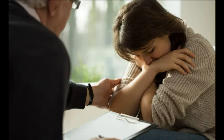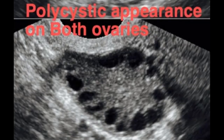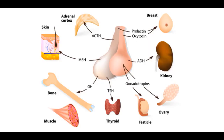Primary infertility refers to the inability to conceive a child for the first time. This can be caused by a variety of factors, including hormonal imbalances, structural abnormalities in the reproductive system, and certain medical conditions such as polycystic ovary syndrome. Hormonal imbalances can be caused by a dysfunction of the hypothalamus or pituitary gland, which regulate the production of reproductive hormones.